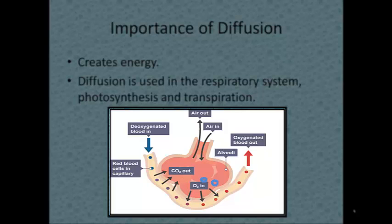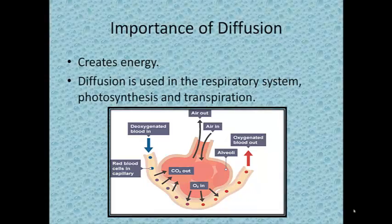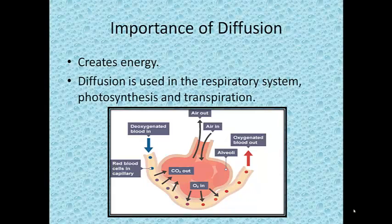Also, the carbon dioxide goes out the blood cell because the concentration of carbon dioxide in the alveoli is less than in the venous blood cell. Diffusion is also used in photosynthesis and transpiration.